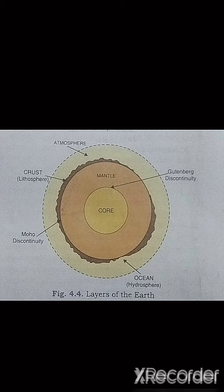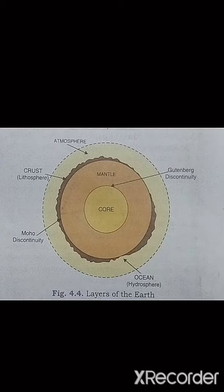Regarding temperature: the upper part of the oceanic crust is 0 degrees Celsius, and it increases with depth, ranging between 600 degrees Celsius to 1200 degrees Celsius. Regarding density: the continental crust is 2.7 grams per cubic centimeter, and the density of the oceanic crust is 3 to 3.4 grams per cubic centimeter.